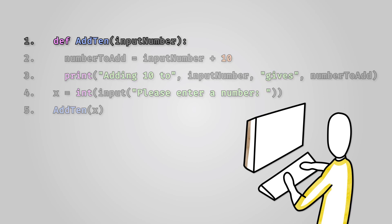As before we have given this procedure a single parameter named input number. Inside our procedure we declare a variable called number to add in which we store whatever is in the input number parameter plus 10. Since we declared number to add inside the procedure it is therefore a local variable. Finally we print things out.